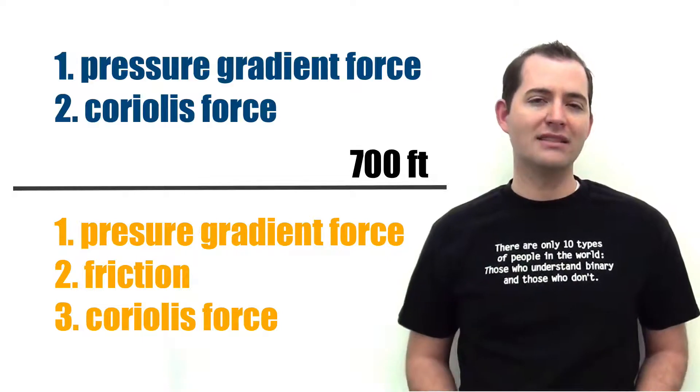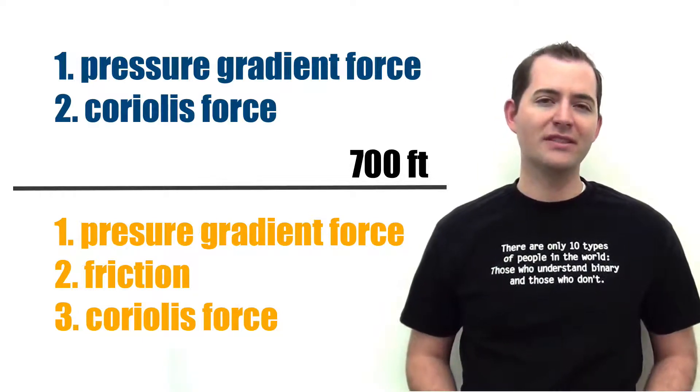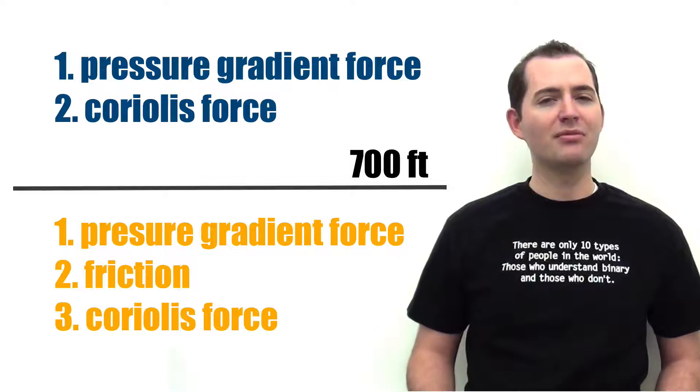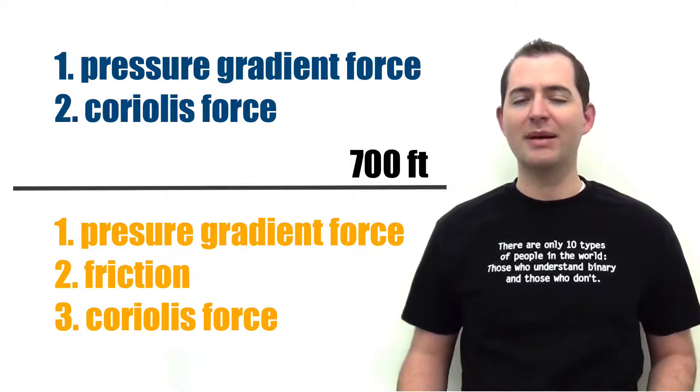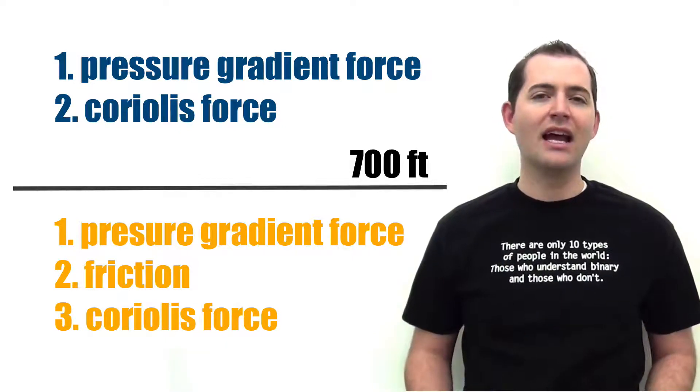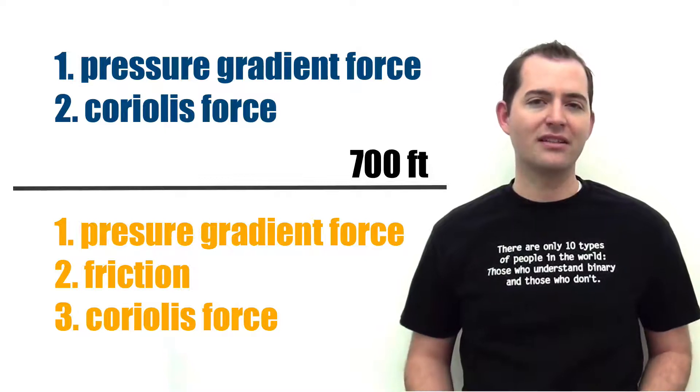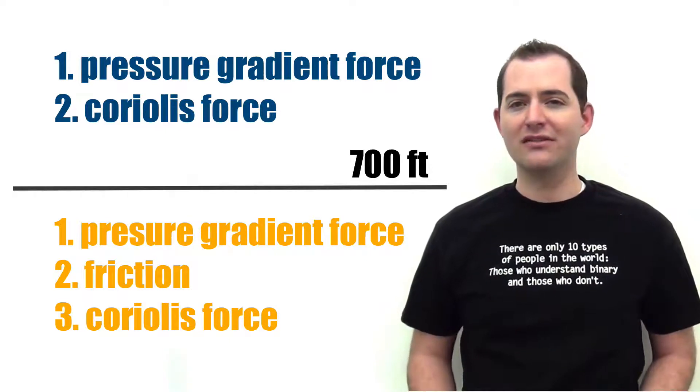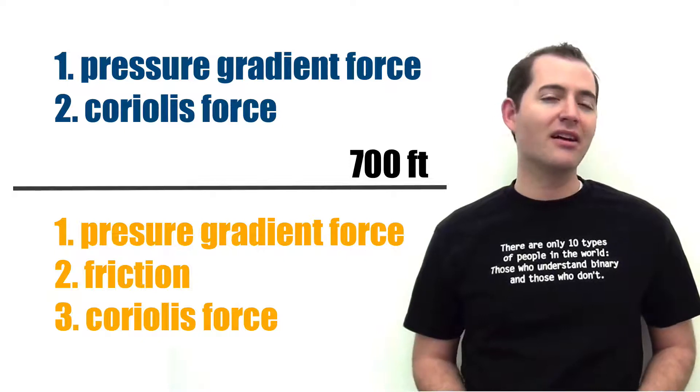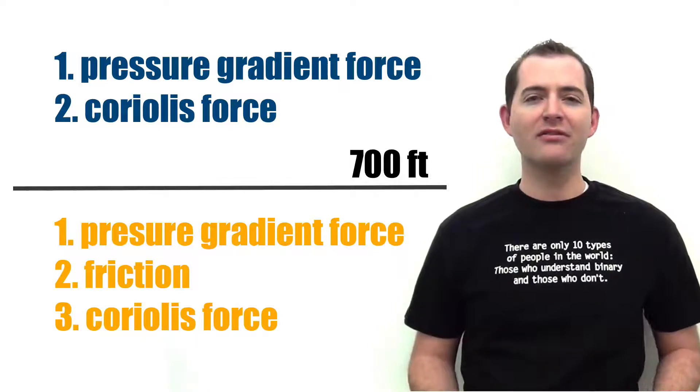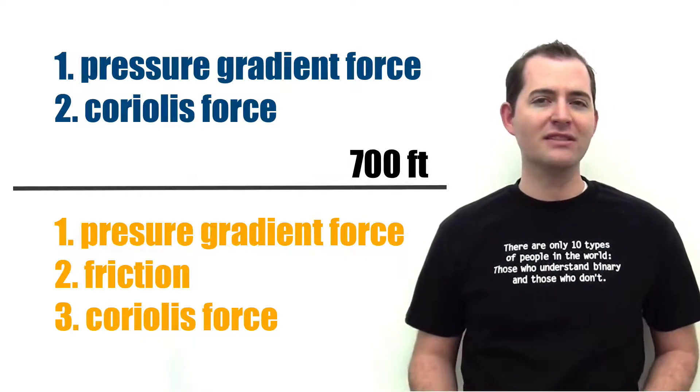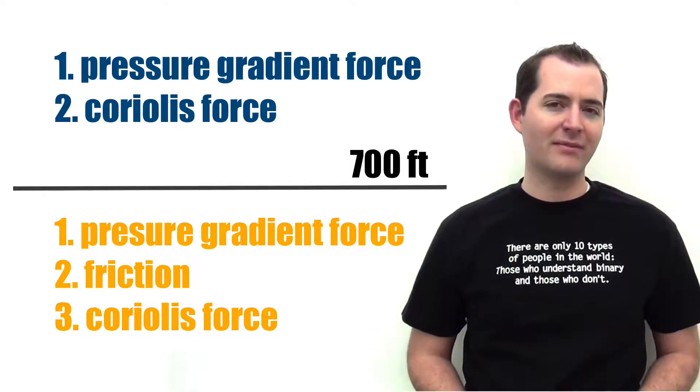While winds over 700 feet above the Earth's surface are impacted by both the pressure gradient force caused by pressure differences and the Coriolis effect caused by Earth's rotation. This is why there are differences in wind movements near the Earth's surface and higher in the atmosphere.